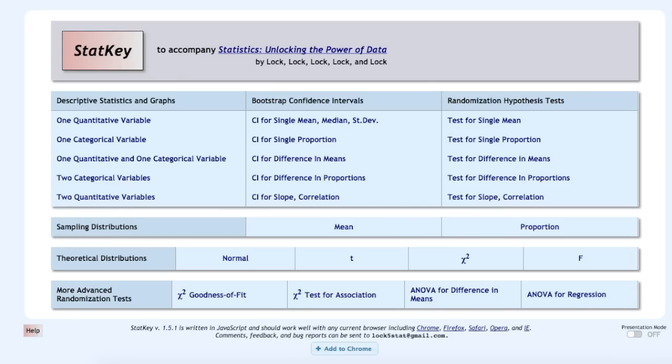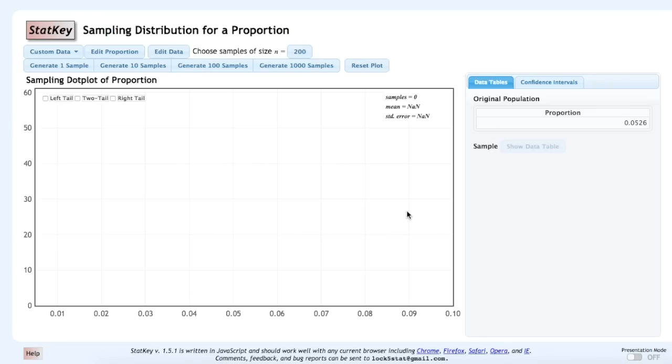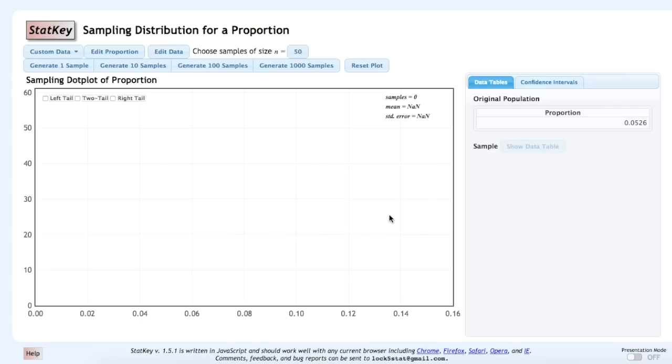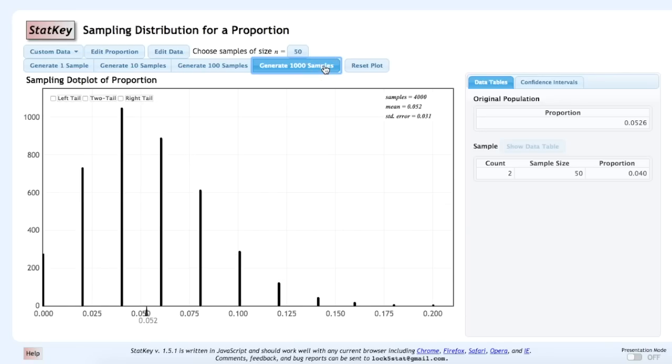In StatKey, I'm going to create a sampling distribution for a proportion. So, our population proportion, or the proportion of spins that should be green if the wheel is fair, was 0.0526. And we have a sample size of N equals 50. So, I'm going to generate a few thousand samples. I've generated 6,000 samples here.